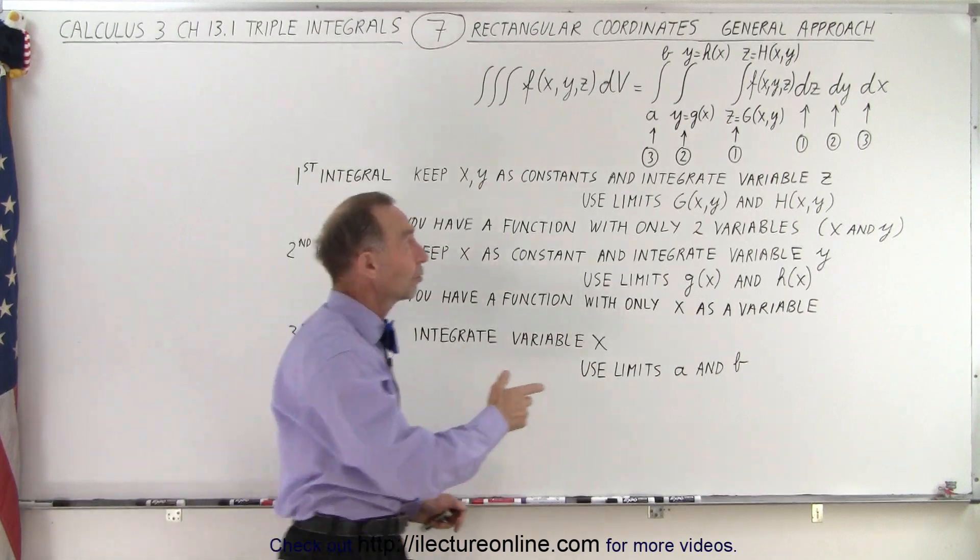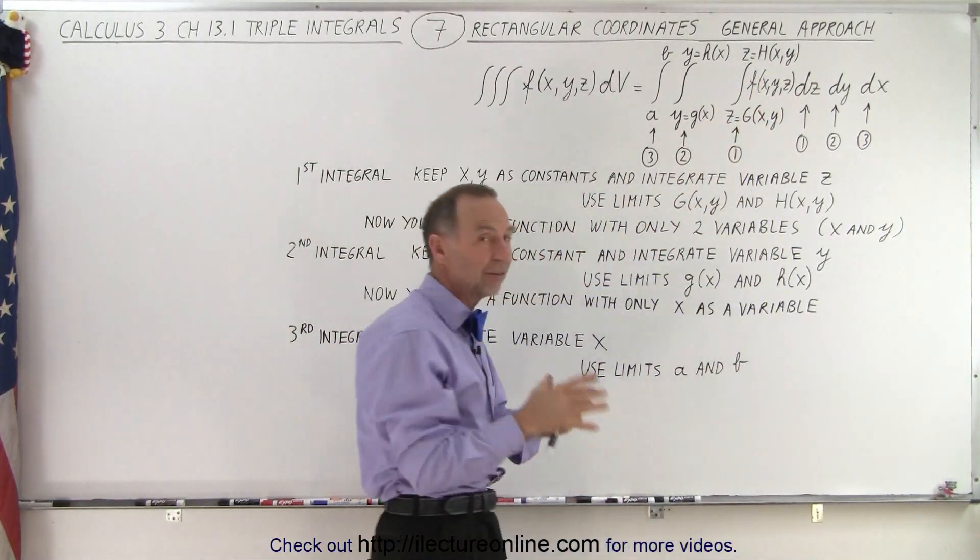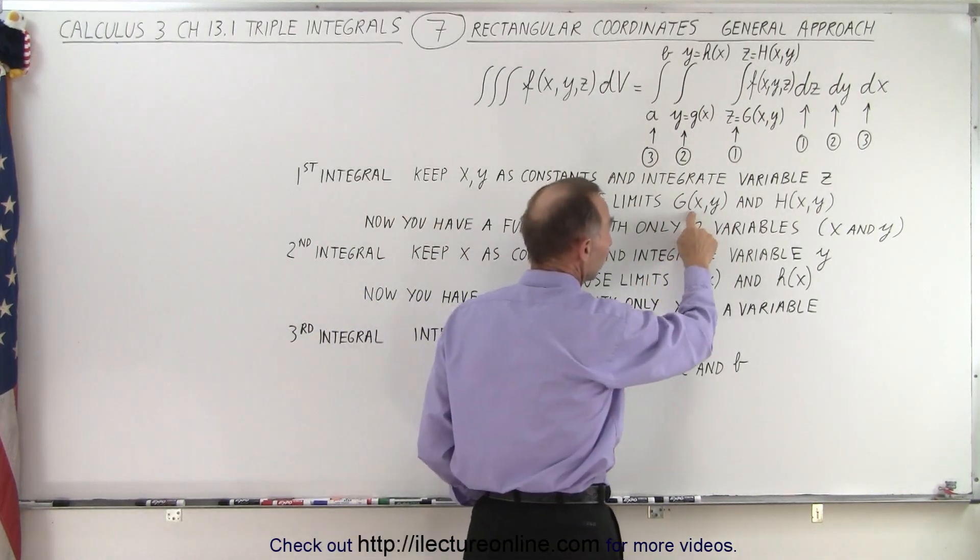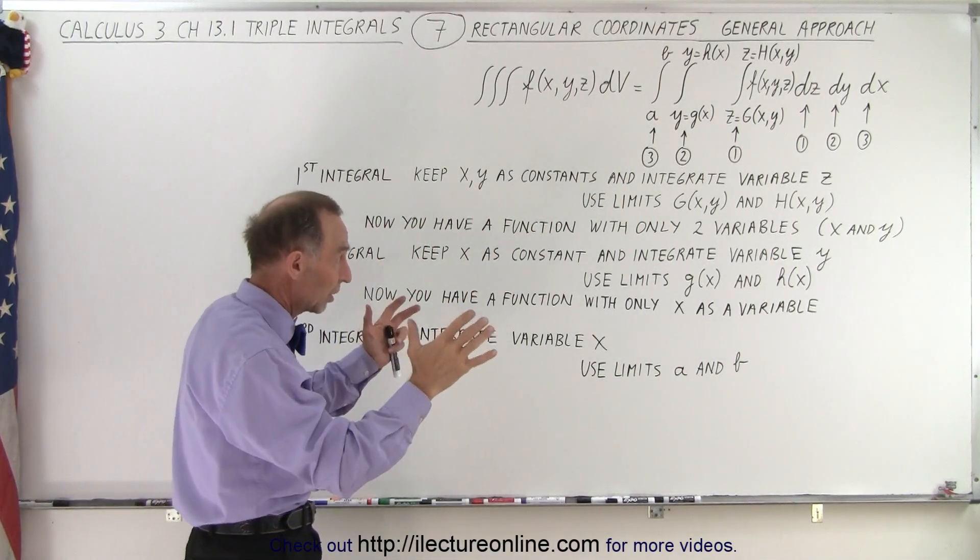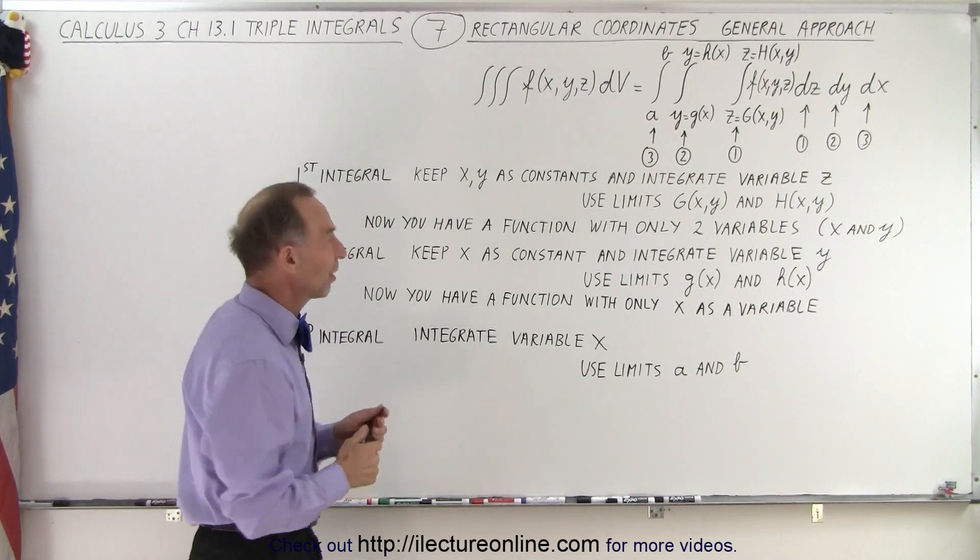And once you integrate that, when you integrate over dz, you end up with some expression that has a z in it. Then when you plug in the upper and lower limits, since those are only functions of x and y, the z disappears and now you have an expression that only has x and y as variables.